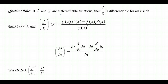Here is the quotient rule: if f and g are differentiable functions, then f divided by g is differentiable for all x as long as g(x) does not equal zero. The derivative is given by (f/g)′(x) = [g(x)·f′(x) − f(x)·g′(x)] / [g(x)]².